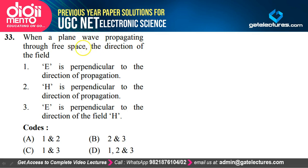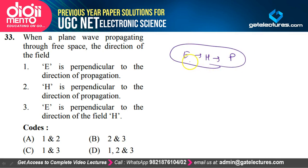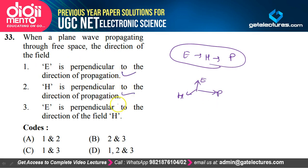When a plane wave propagates through free space, E is perpendicular to the direction of propagation — true. H is perpendicular to the direction of propagation — true. E is perpendicular to H — true. The electric field, magnetic field, and propagation direction are all perpendicular to each other, which is why it is called a transverse wave. Option D satisfies our discussion.